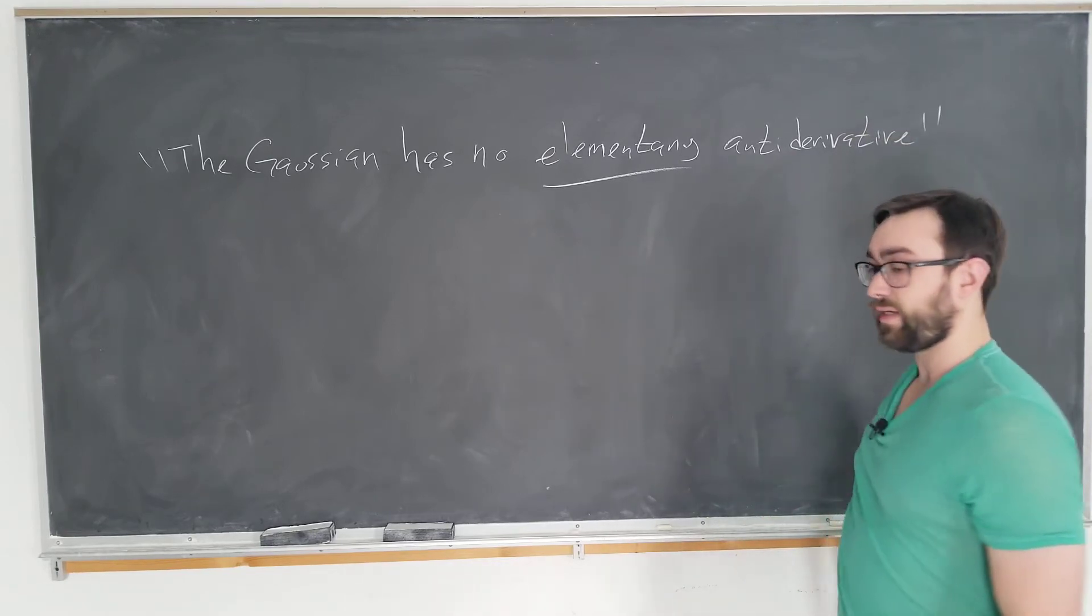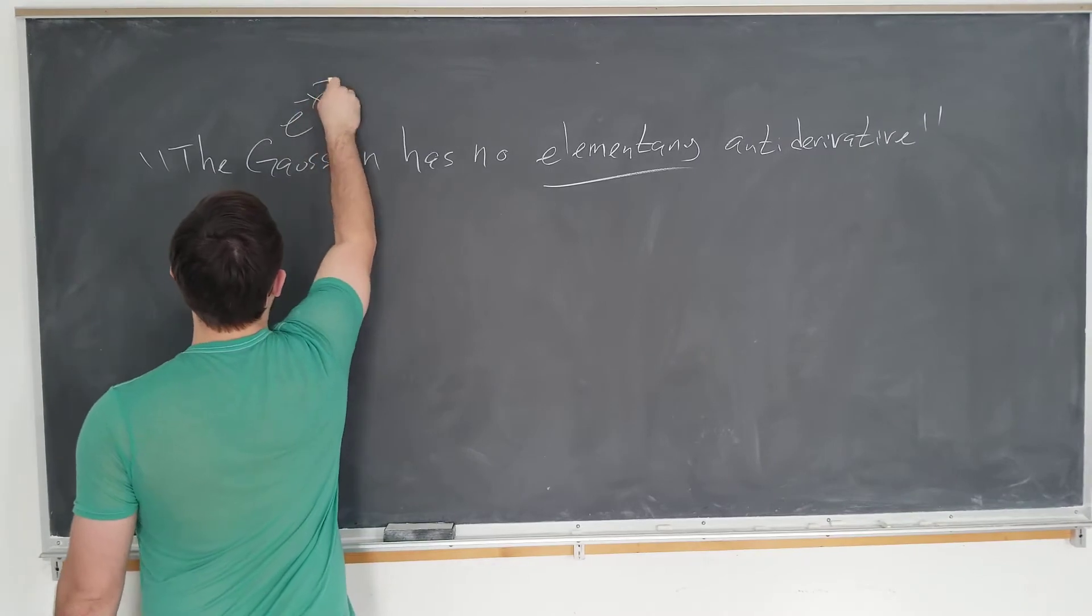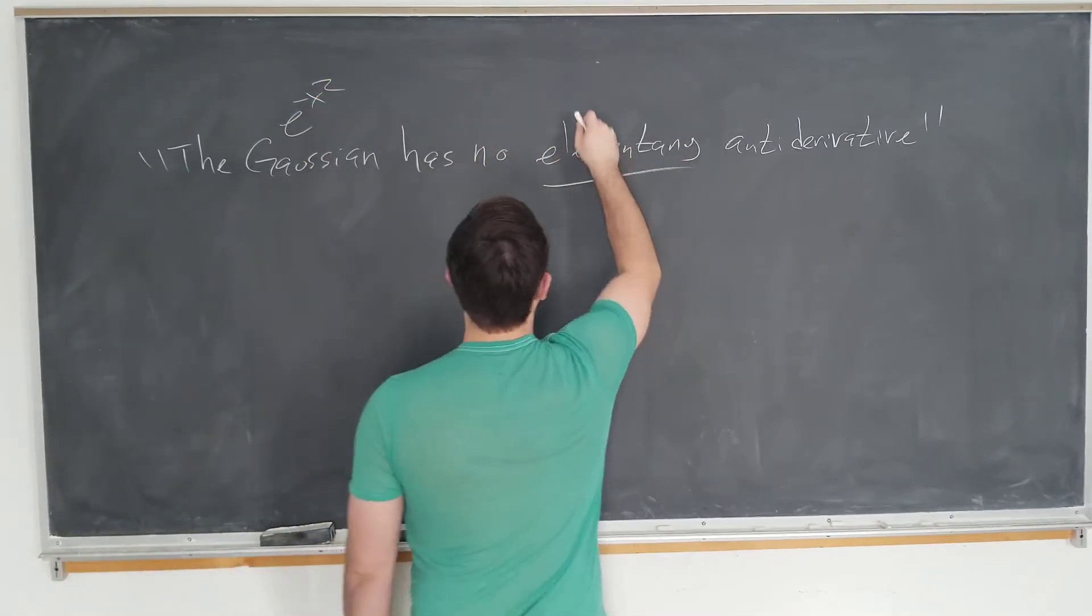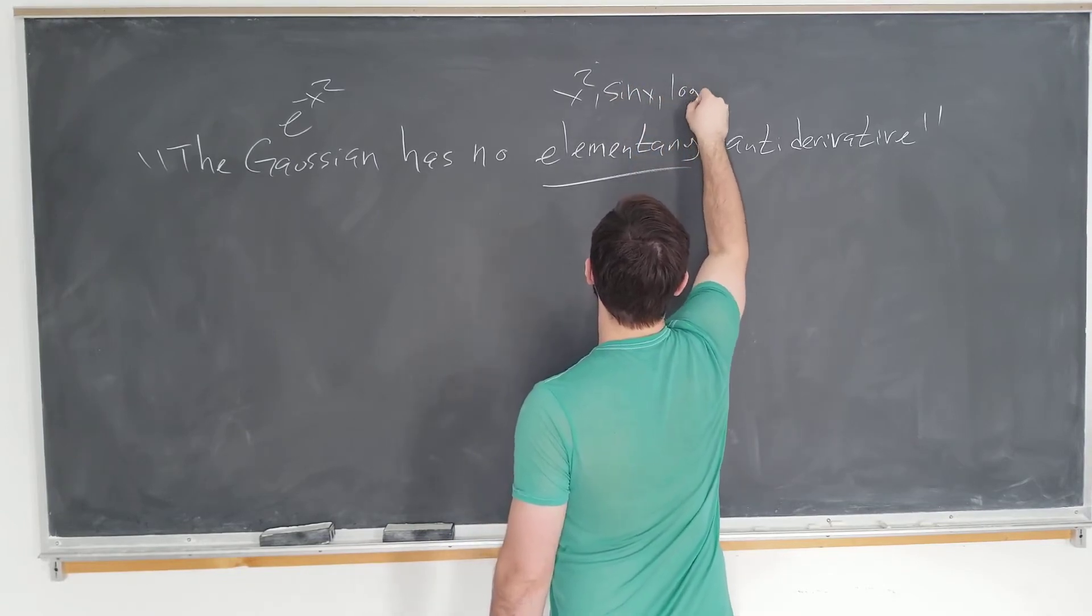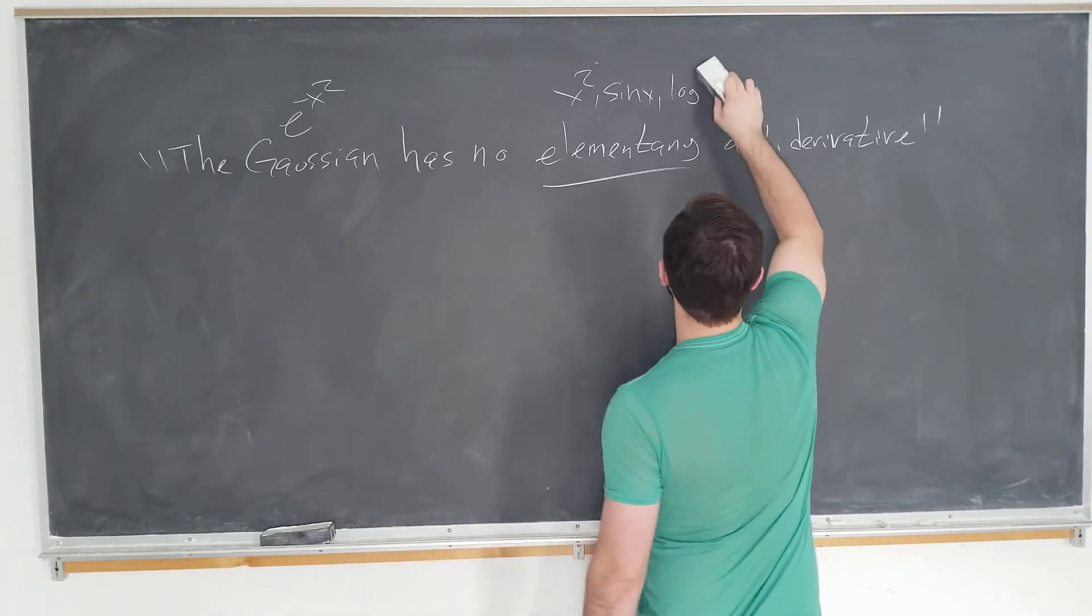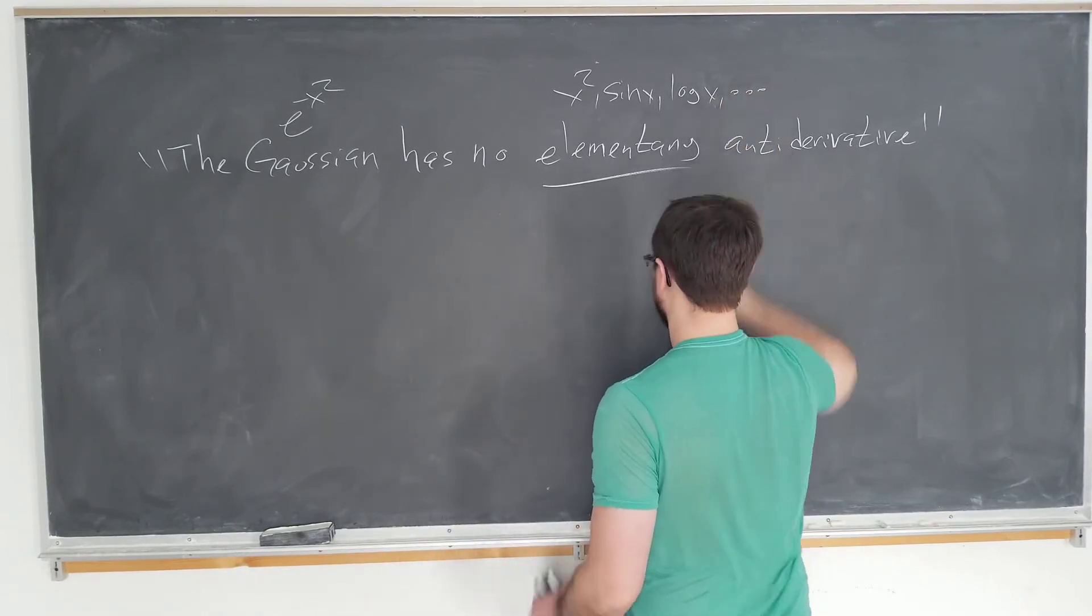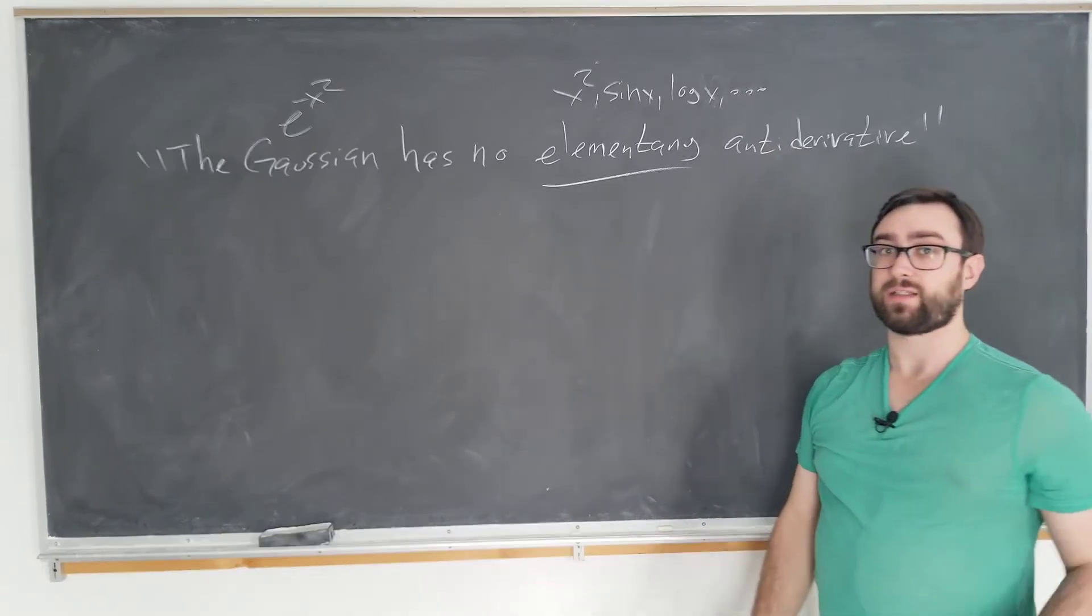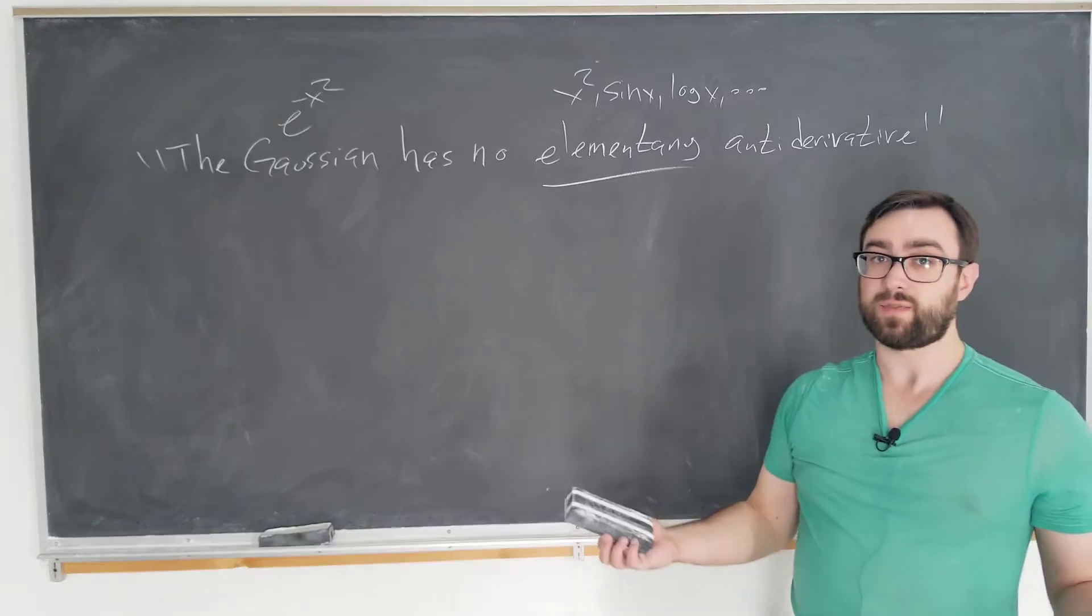What do I mean by Gaussian? Well e to the minus x squared of course. What do I mean by elementary? Well functions like x squared, sine x, log x, etc. Basically all the ordinary functions that you integrate and differentiate in calculus are elementary functions. But they are in fact a definition. What makes a function elementary is that we define it to be elementary.